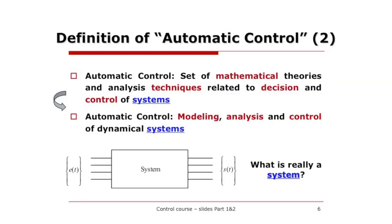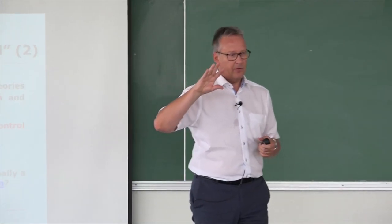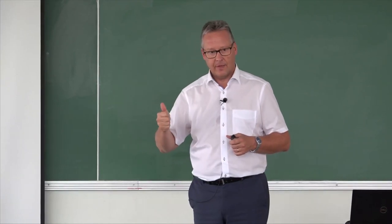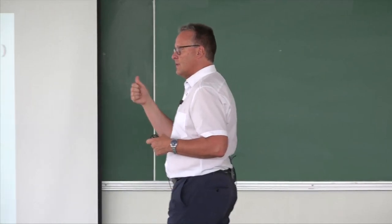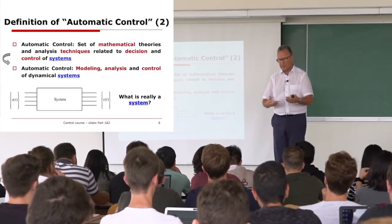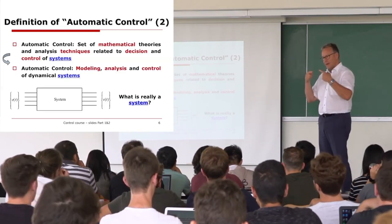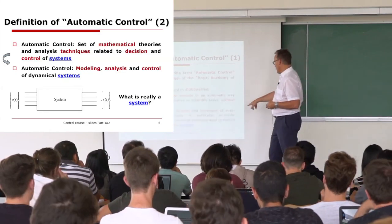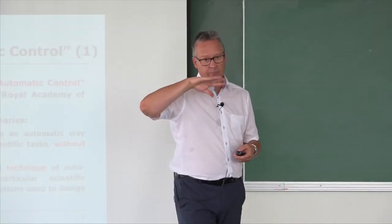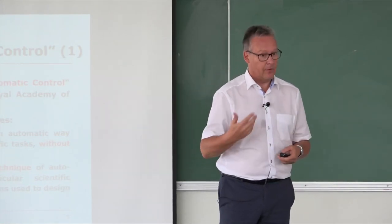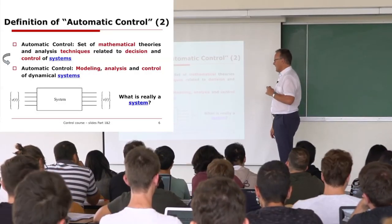More in detail, it's a set of mathematical theories and techniques related to decision and control. To control a system you need a model. You need to take decisions — that is what you can do as a human when you look at the system manually. Now, as I said before, we want to do that without human assistance. So the algorithm or strategy you define must be able to replace human judgment and take decisions instead of human.